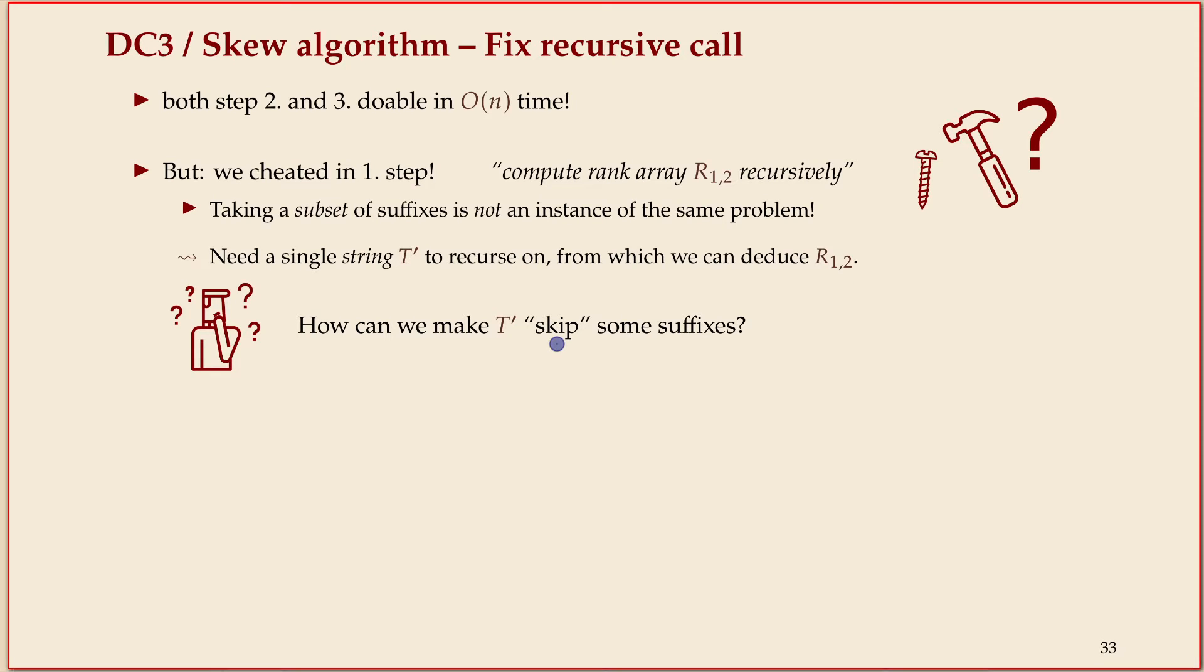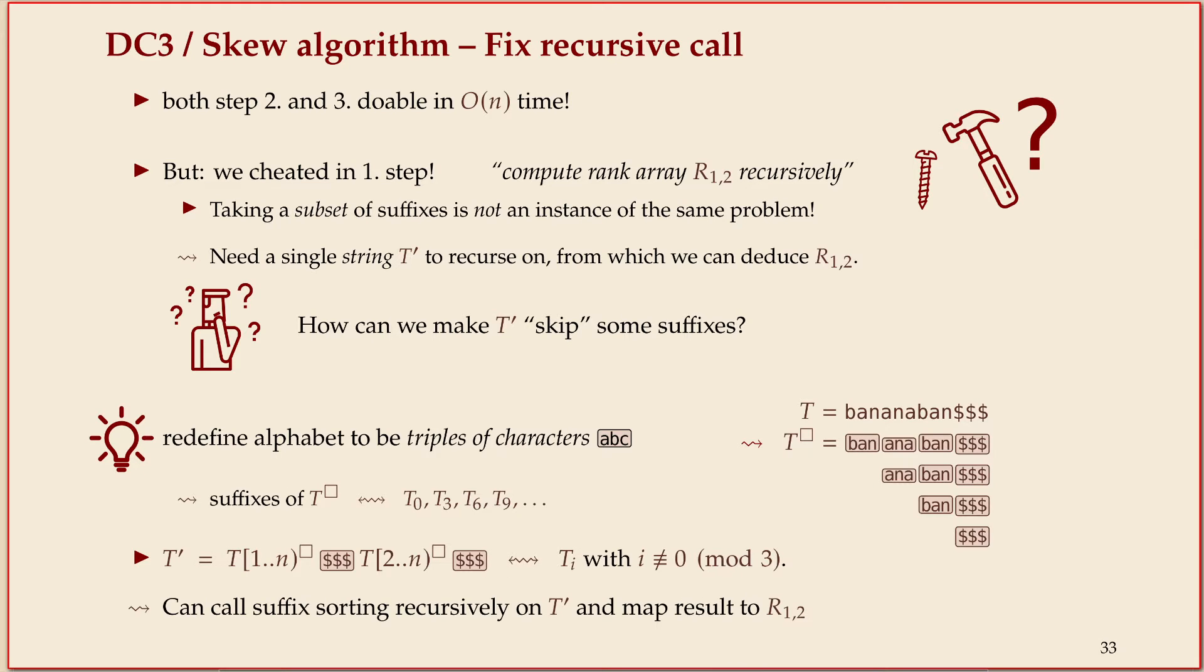We need a string that somehow skips suffixes. If that sounds odd, you need to modify the string to make that work. Luckily, there's a relatively simple trick. Instead of taking the original alphabet, we form triples or triplets of characters. We've seen that kind of notation before in the compression unit. All that means is I'm blowing up my alphabet - instead of having all the letters I had before, I now have all triples of possible characters in principle, and I'm transforming my string.